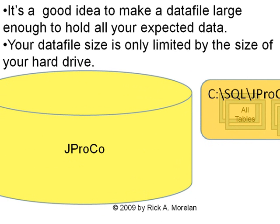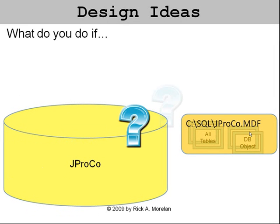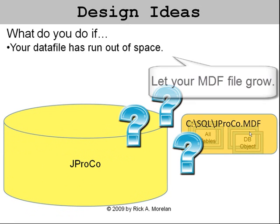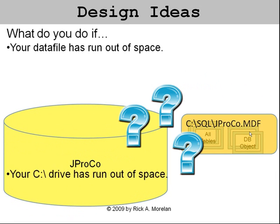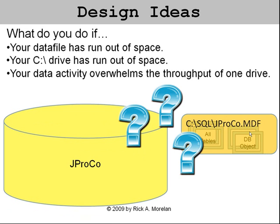How big can you make it? It depends on how big the hard drive is — that's your limit. What are you going to do if your data file runs out of space? If you have a 100-gigabyte drive with a 30-gigabyte file and 70 gigabytes free, you can elect to grow the MDF to take up the unused space. What if your drive runs out of space? You'll need a bigger drive or another drive. What if business throughput is faster than the current drive can handle? For these problems, there are a number of well-known and tested solutions.